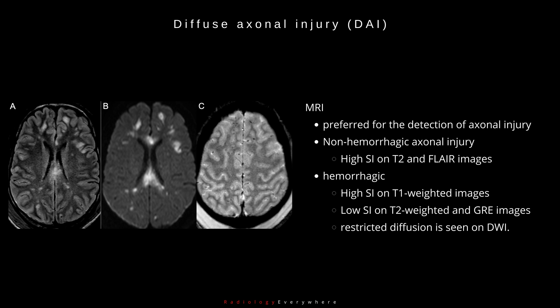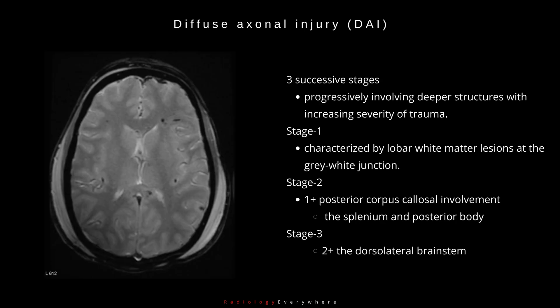Restricted diffusion is seen on DWI. DAI tends to occur in three successive stages, progressively involving deeper structures with increasing severity of trauma. Stage 1 is characterized by lobar white matter lesions at the grey-white junction. Stage 2 additionally shows posterior corpus callosal involvement, usually involving the splenium and posterior body. Stage 3 involves the dorsolateral brainstem in addition to stage 1 and 2 lesions.